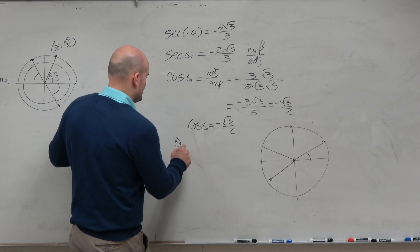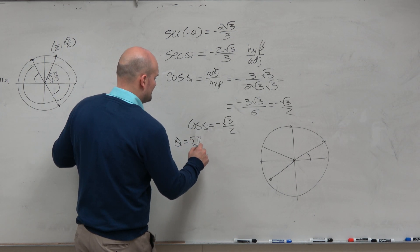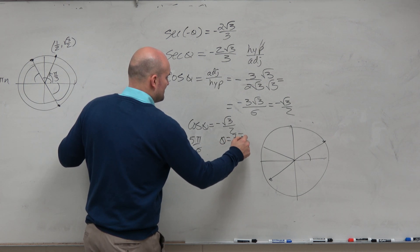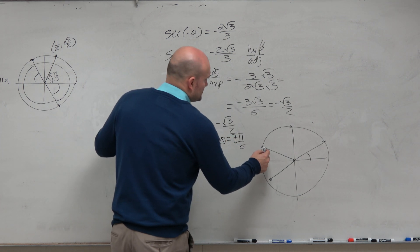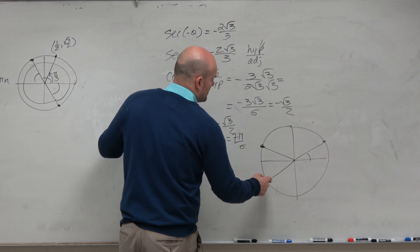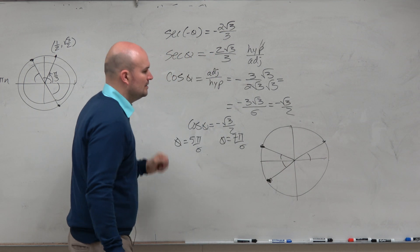So since cosine is negative in the second and the third quadrants, we can have our angles are going to be theta equals 5 pi over 6, and theta equals 7 pi over 6. Now, do these two solutions, because they all have the same reference angle, which is pi over 6, are these equidistant from each other?